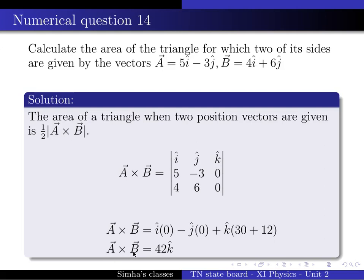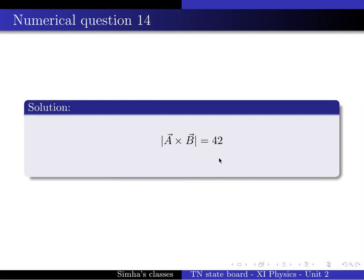So a cross b vector is equal to 42k. Now we calculate the area of the triangle using the formula: area equals 1 by 2 times modulus of a cross b. The modulus equals the square root of 42 squared, which is 42. Therefore the area equals 42 divided by 2, which is 21 square units. This is the answer for this particular problem. Thank you.